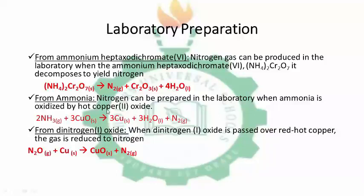We can also prepare nitrogen from ammonia by oxidizing the ammonia using hot copper(II) oxide. The ammonia serves as the reducing agent while the hot copper(II) oxide serves as the oxidizing agent. This is the equation of the reaction — the ammonia gas reacts with copper(II) oxide to liberate nitrogen gas and form a deposit of copper, and water molecules are also formed.